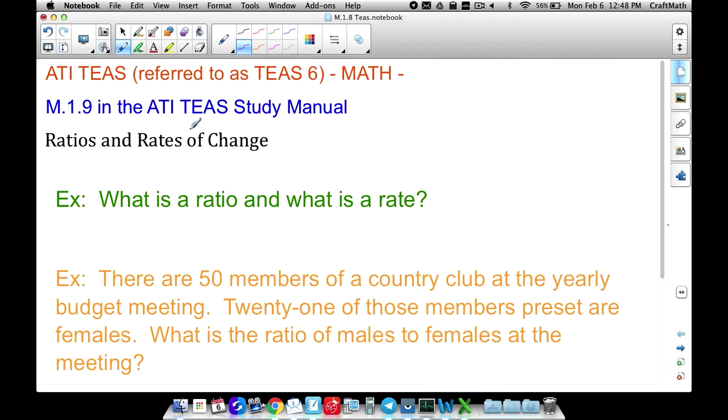But anyway back to the tutorial so we got ratios and rates. Well what is a ratio? A ratio is really just a comparison of two numbers typically written as a fraction or you can have it written with a little colon in between it. But two to three, two thirds, however you want to read that, that's a ratio.